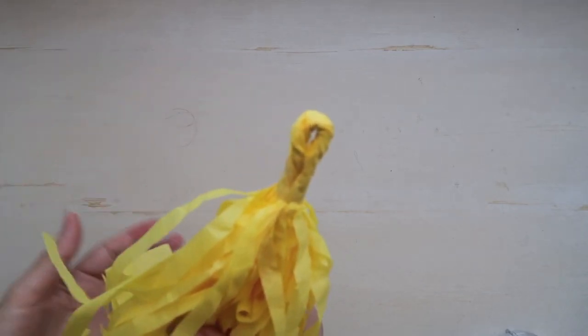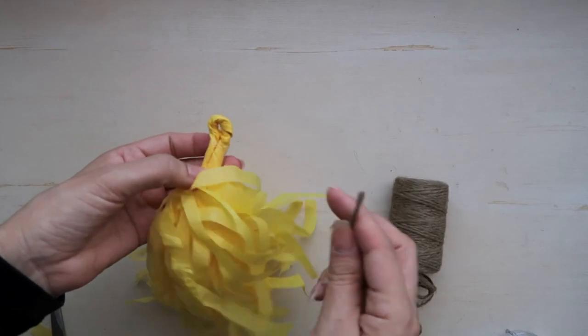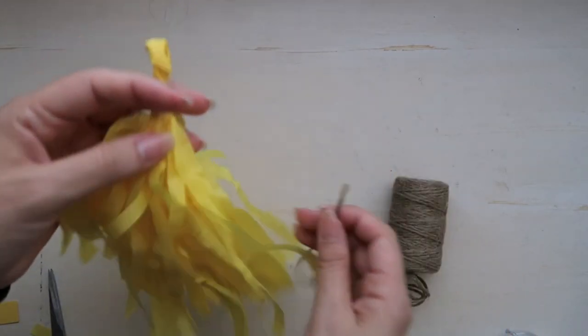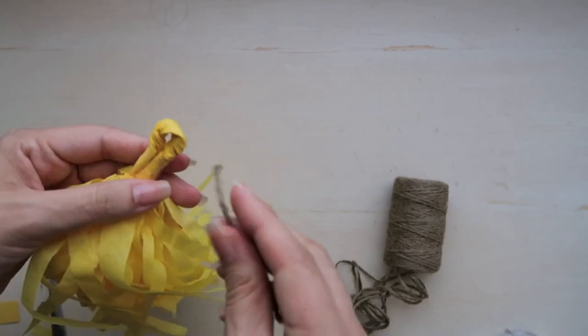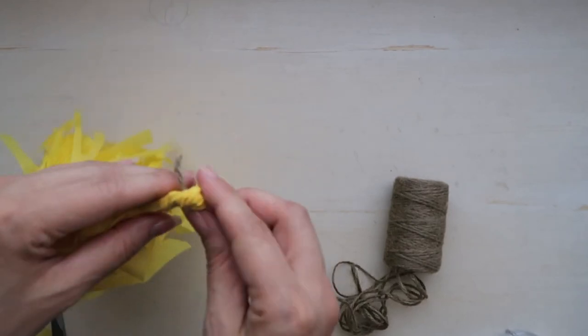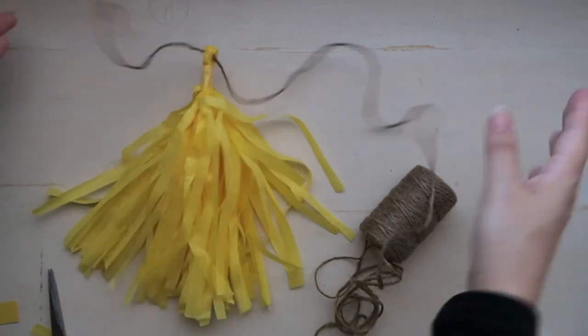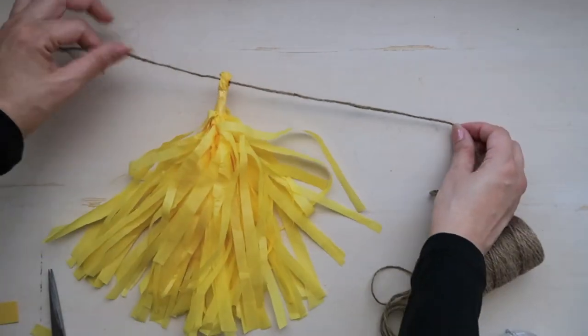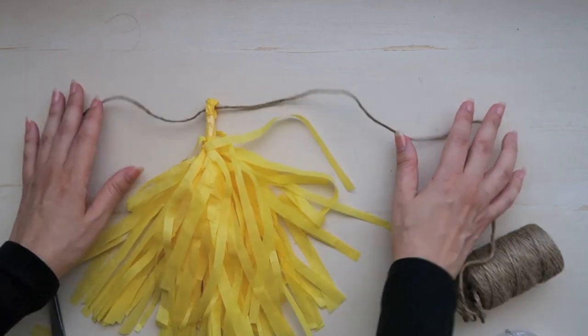And there we have our tassel and with a loop for the string to pull through. So when you're done with all of the ones you want to use, take your jute string, pass it through the center of the loop, and then just make as many as you would like and the colors that you would like all around like this.